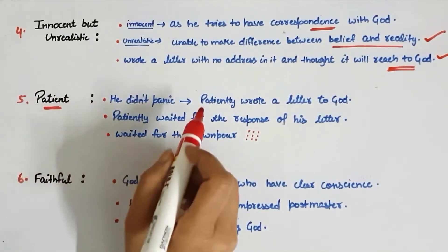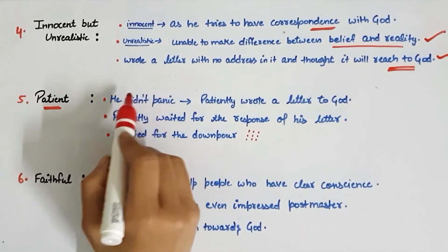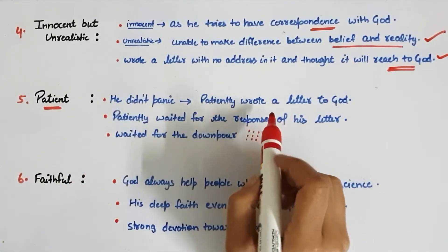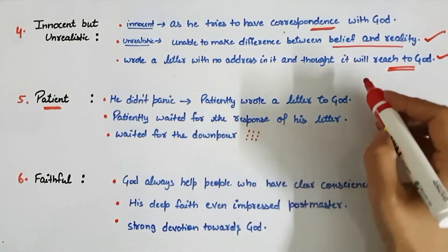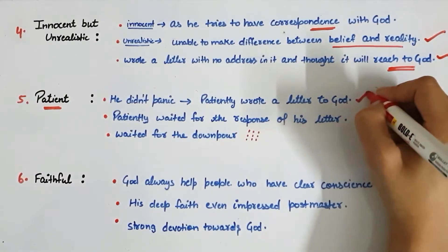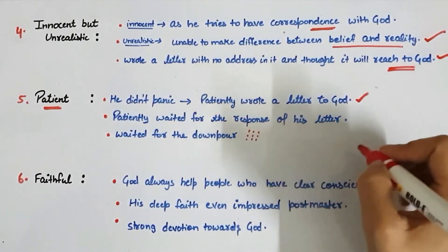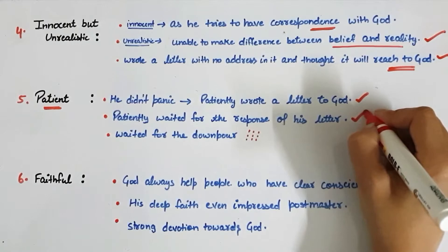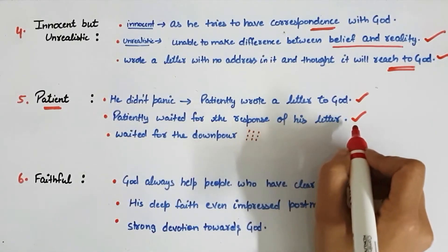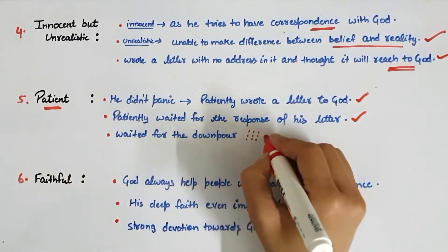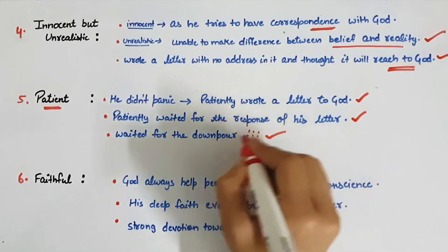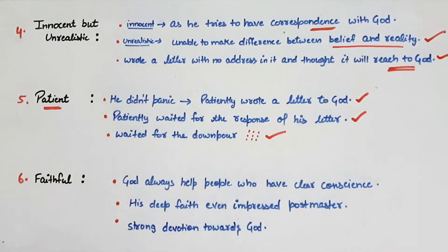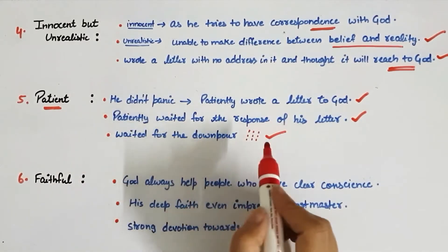Next point: patient — Lencho had a lot of patience. When all his crops were destroyed, he did not panic at all. He patiently wrote a letter to God and then waited for the response of his letter. He also initially waited patiently for the downpour. There is a line in the chapter — 'Throughout morning he was gazing at the sky in the northeast direction' — which shows how very patient he was.